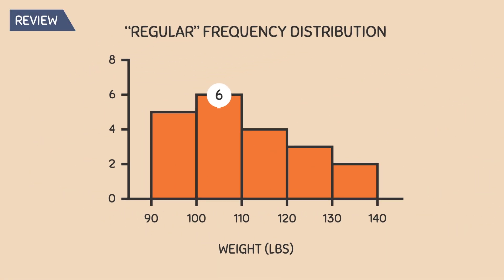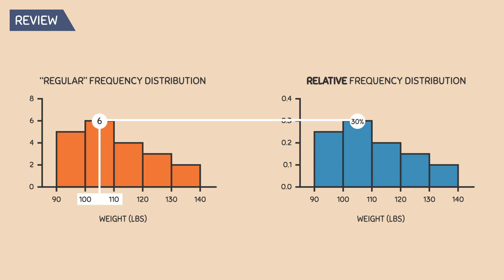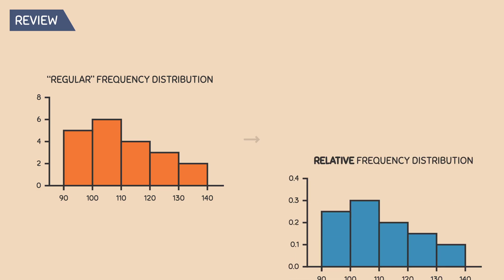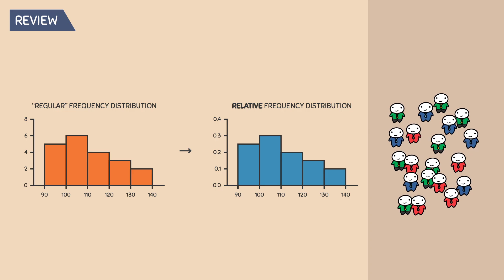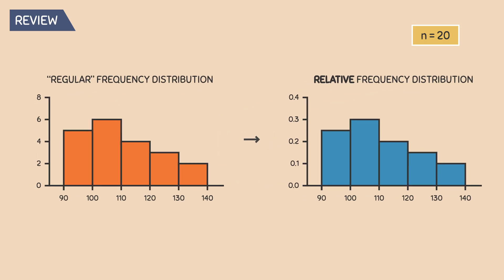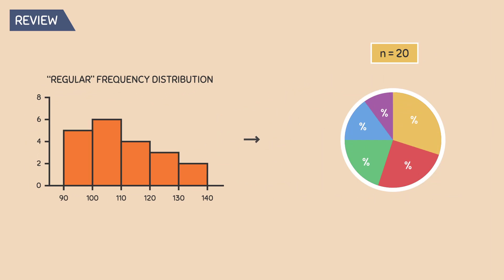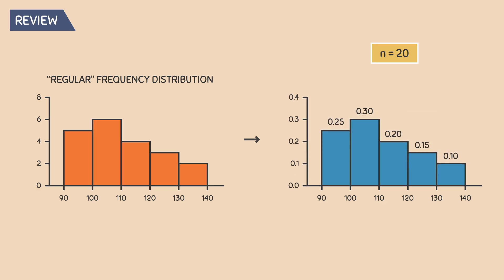For example, there are 6 people that weigh between 100 and 110 pounds, but we can also say that 30% of the people in our dataset weigh between 100 and 110 pounds. To convert a frequency distribution into a relative frequency distribution, we first needed to know the total number of individuals — in this example, 20 people. Next, we determined the proportion of individuals in each interval by dividing the number of people in each interval by the total. This gave us our relative frequency values, and if you add up all relative frequencies, they should sum to 1.